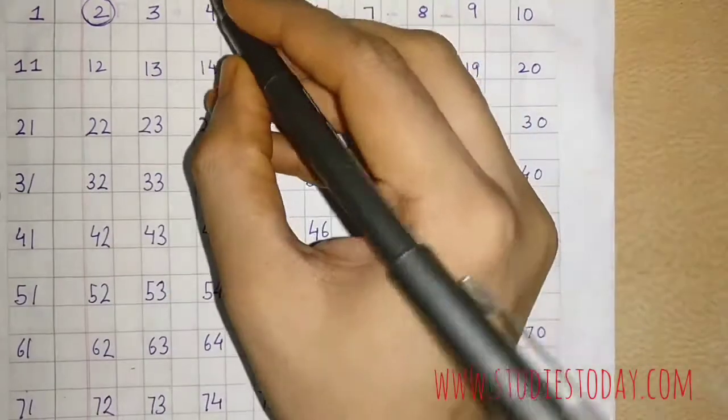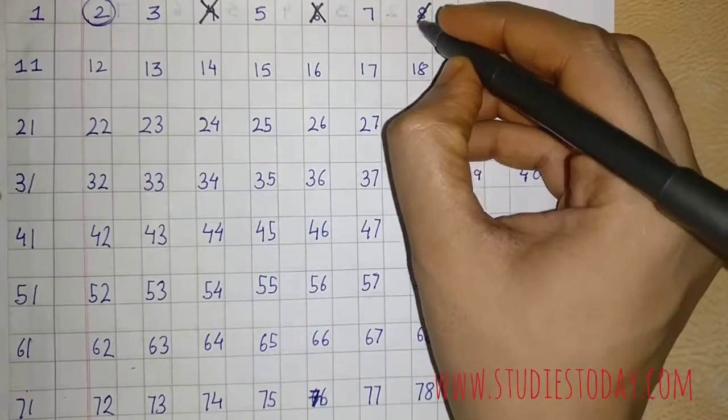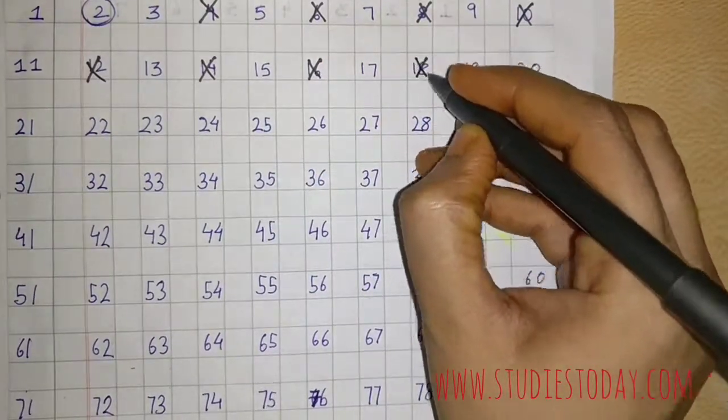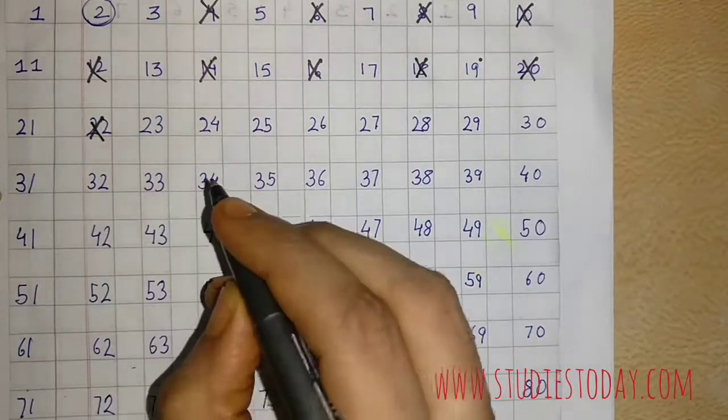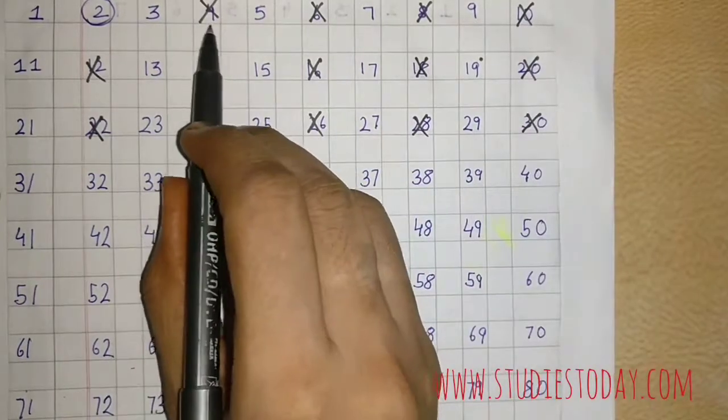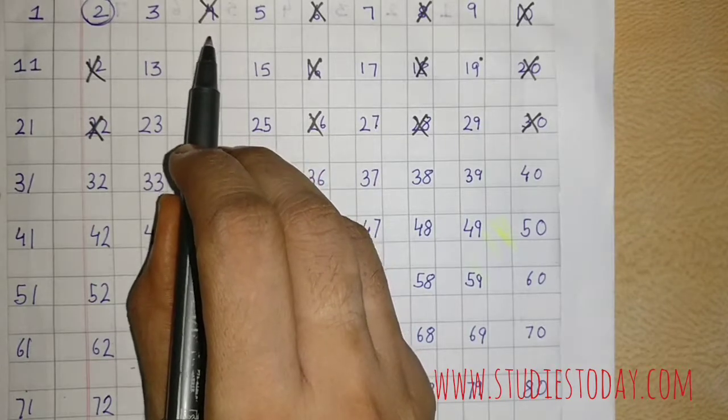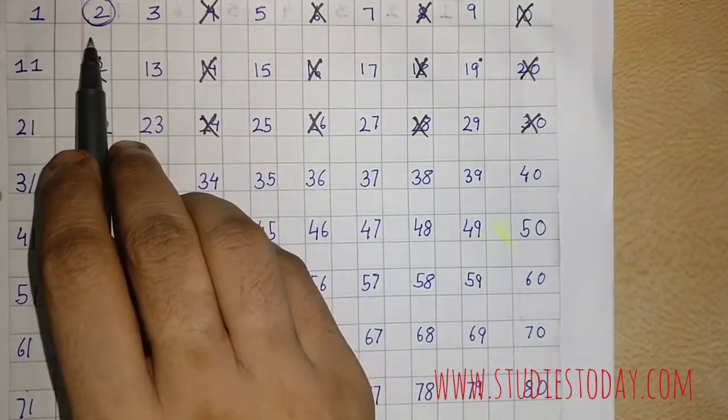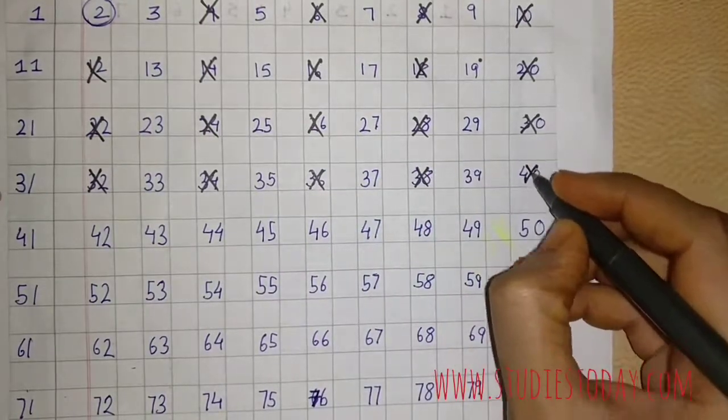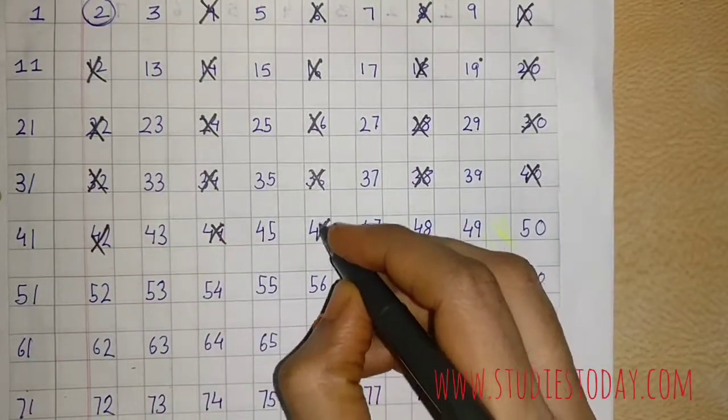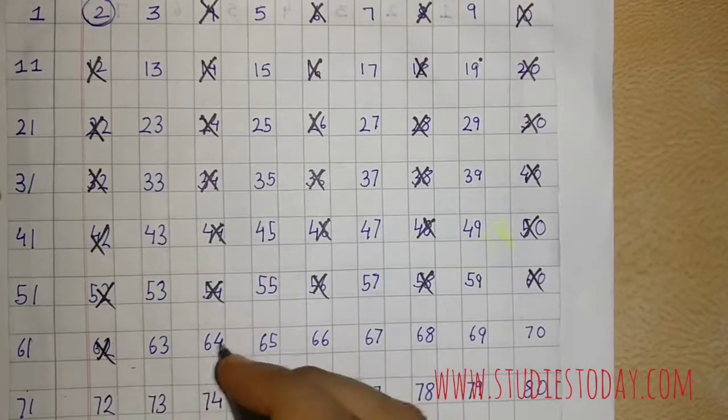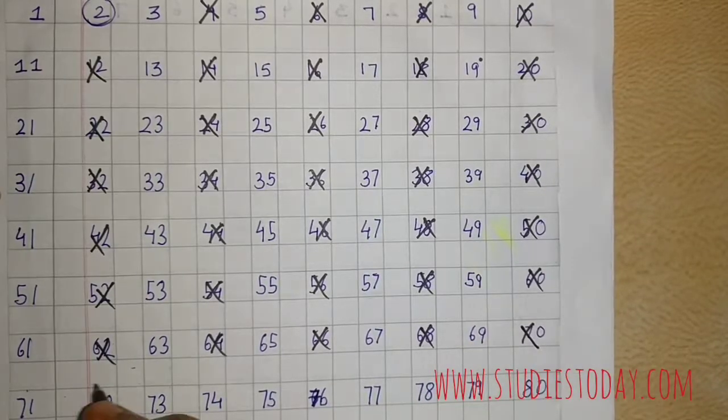Then I will cut out all the multiples of 2, as all these numbers have one factor 2 present in them. For example, if I take the number 4, the factors of 4 are 1 and 4, and you also have 2 as a factor. So all the even numbers will be cancelled as they will always have 2 as one of their factors. The numbers that I am cutting are composite.